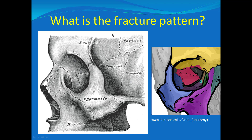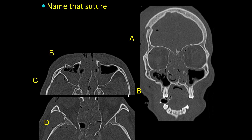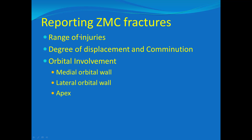Next we'll talk about the ZMC fracture, which involves fractures of the zygomatico-temporal suture, zygomatico-maxillary, zygomatico-frontal, and zygomatico-sphenoid. This used to be called a tripod fracture, but since there are four components, it may now be referred to as a quadrapod fracture. When reporting ZMC fractures, you want to discuss the range of injuries, degree of displacement and comminution, and whether the orbit is involved — particularly the medial and lateral walls. With orbital fractures, always pay attention to the orbital apex, because a fracture there can impinge on the optic nerve.